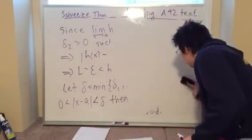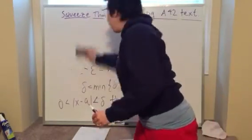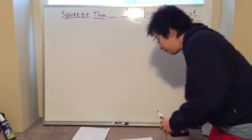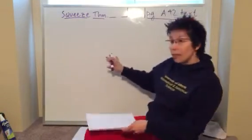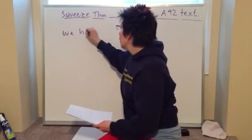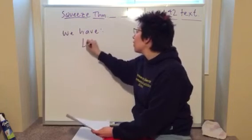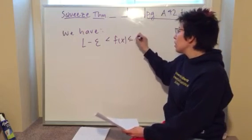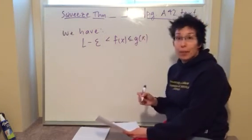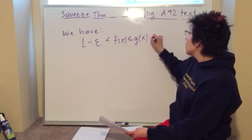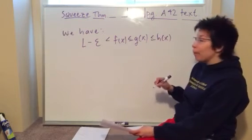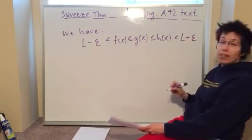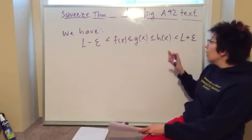Well, we'll see in a second. Alright, so, how do we use condition one and two? So, then we have condition one and two combined, so that L minus epsilon is less than f(x). f(x) is less than or equal to g(x), by the supposition of the theorem, and that's less than or equal to h(x), by the supposition of the theorem, and h(x) is less than L plus epsilon, not L minus, L plus epsilon, and that's by condition two.